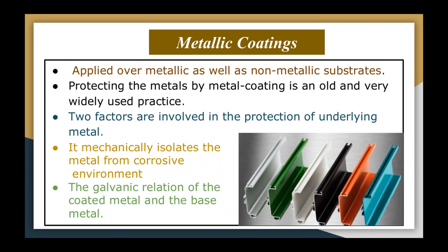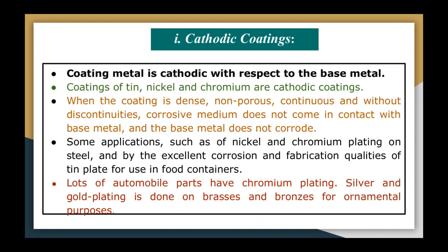The two factors involved in protection of metal by metallic coating are: first, it mechanically isolates the metal from the corrosion environment; and second, the galvanic relation between the coated metal and the base metal. Based on these factors, metallic coatings are classified into two categories: cathodic coatings and anodic coatings.